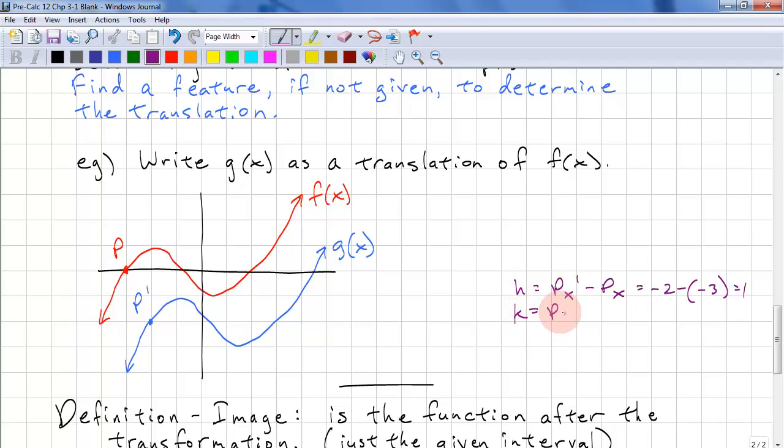k equals p y prime minus p y. And we have negative 2 minus 0, that's negative 2.